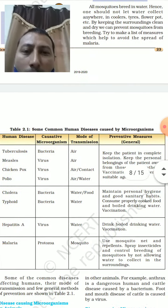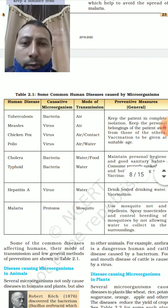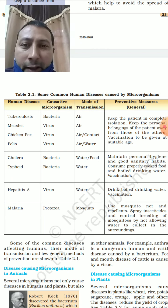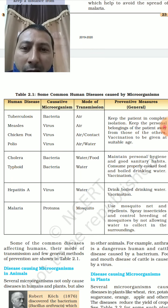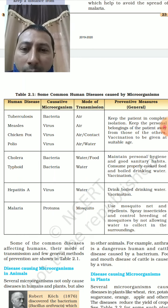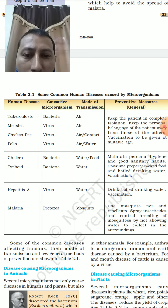Some common human diseases caused by microorganisms include: tuberculosis by bacteria, measles by virus, chicken pox by virus, polio by virus, cholera by bacteria, typhoid by bacteria, hepatitis A by virus, and malaria by protozoa.